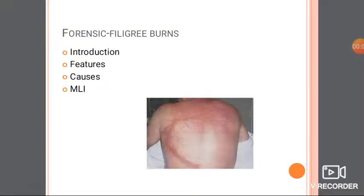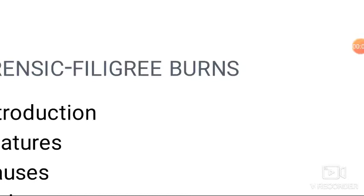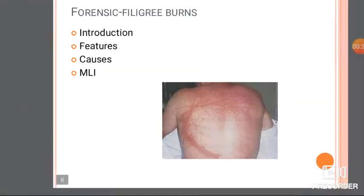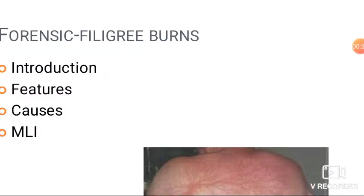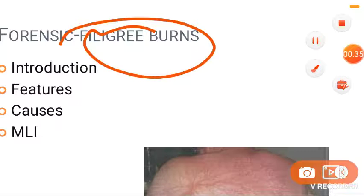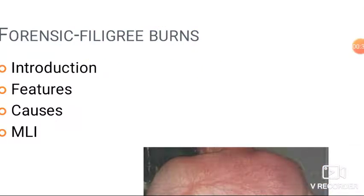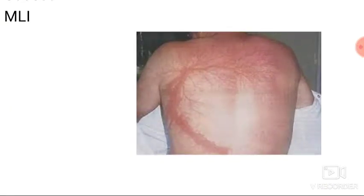Filigree burns are superficial, thin, irregular, tortuous markings involving moist creases and folds of skin. They are caused when the effect of lightning is very superficial. Because the effect of lightning is superficial, the burns are also superficial.